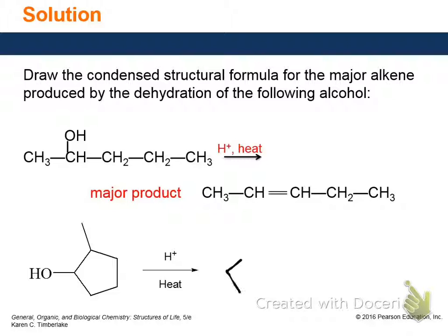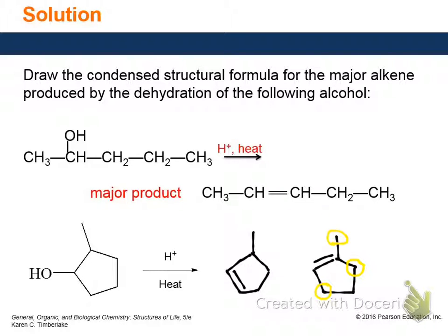Which one is the major product? The one on the left. Zaitsev's rule says the product has the most carbons attached to the double bond. On the left, there's my double bond — it has one and two carbons attached. If you draw the hydrogens in, carbon has to make four bonds. There's one hydrogen here and two hydrogens there, and the double bond has to go to this side.